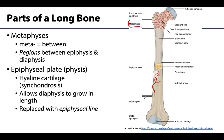In a growing bone, the metaphysis will contain an epiphyseal or growth plate. This is actually a type of joint referred to as a synchondrosis, which makes sense because this is an area where two separate parts of a bone join during the ossification process. The epiphyseal plate is composed of hyaline cartilage, which grows first, allowing bone to replace the cartilage over time, enabling the diaphysis to grow and increasing bone length.